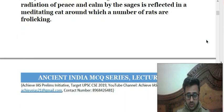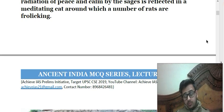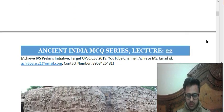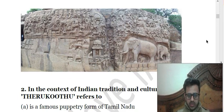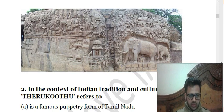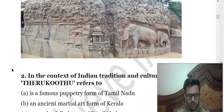There is also a representation of peace and calm shown by sages reflected in a meditating cat around which a number of rats are frolicking. Here is the picture I have included. You can see that this is a monolith composed of a single stone — it is beautifully carved with human figures, elephants, and an animal world. This is basically Arjuna's Penance or the Descent of Ganges.